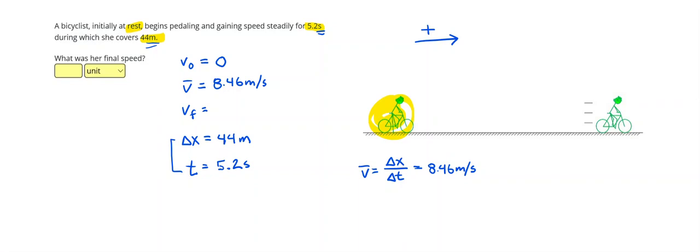Then I can find the final velocity using the average velocity rule. And we've derived this a few times before, so it's going to be 2 times the average velocity minus the initial velocity if we had it. But since there's no initial velocity, we can just double the average. And that gives me 16.9 meters per second.